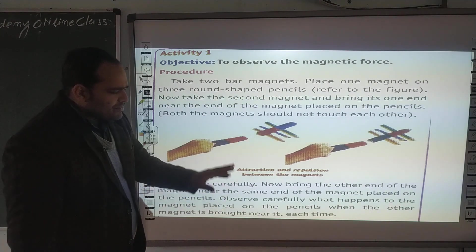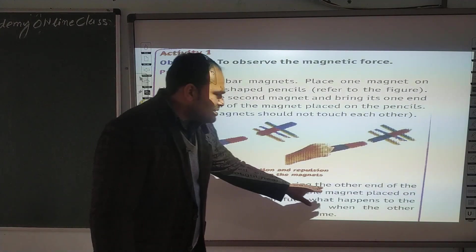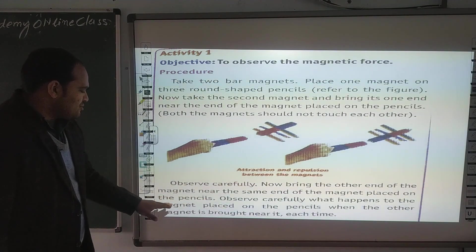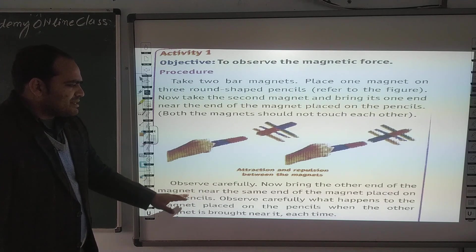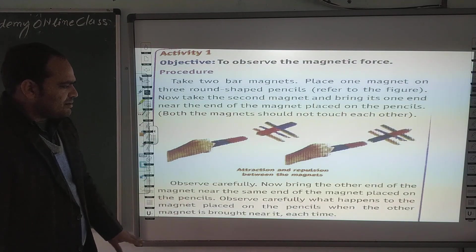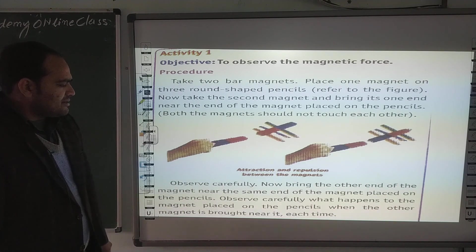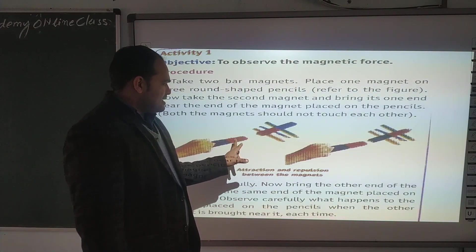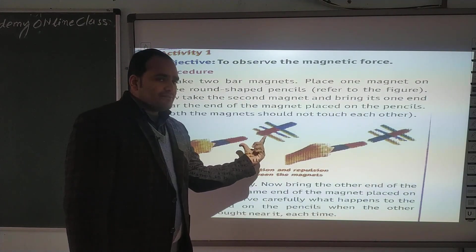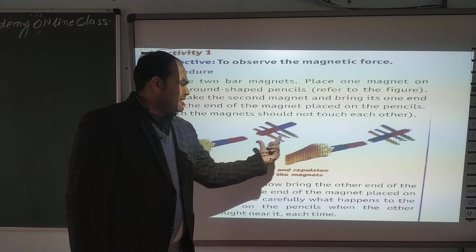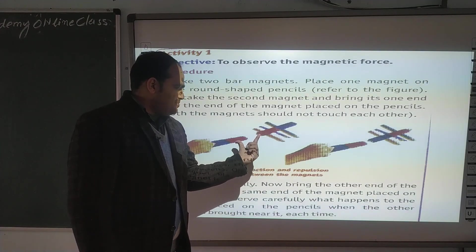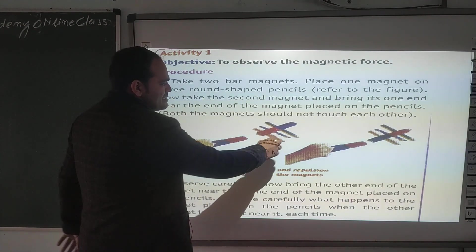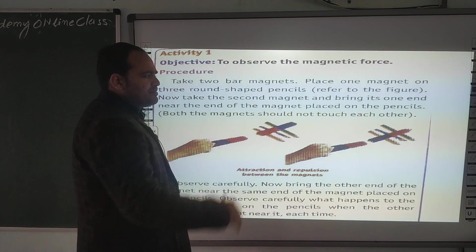Observe carefully. Bring the other end of the magnet near the same end of the magnet placed on the pencils. Observe carefully what happens to the magnet placed on the pencils when the other magnet is brought near it each time. Suppose that same poles हैं — जो red colors के हैं वो same poles हैं। दूसरे वाले magnet को pencil पे रख दिया है। जब same poles होंगे, तो repulsion होगा, तो ये pencils roll करेंगी और ये magnet आगे forward बढ़ जाएगा।